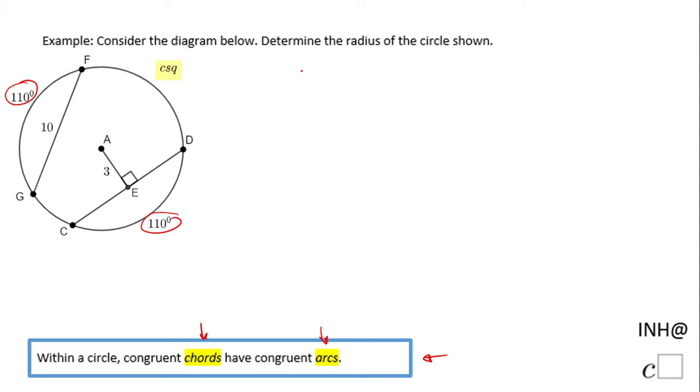I know GF is congruent to CD, and since GF is 10, that means CD is also 10.